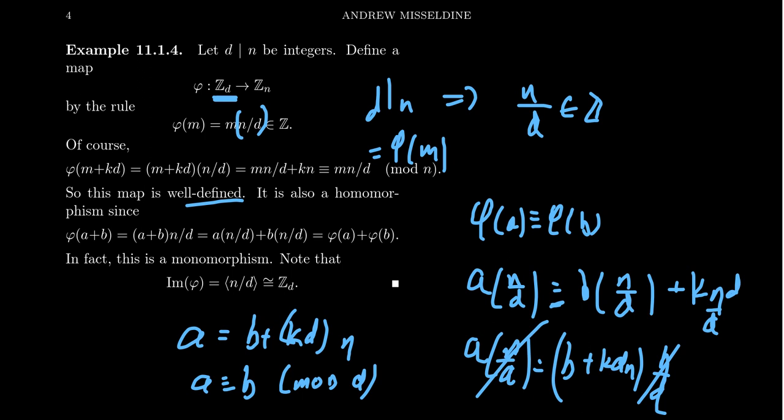And what we're going to see, this is something we'll explore much more in the future, but note that the image of phi is actually equal to n divided by d. That's what's going on here. And that's isomorphic to zd, which was the domain right now. I'm not saying these sets are equal to each other, but they're isomorphic. It's the same group up to isomorphism.